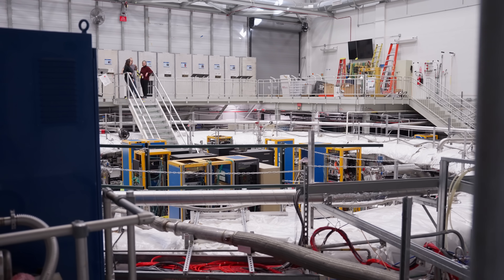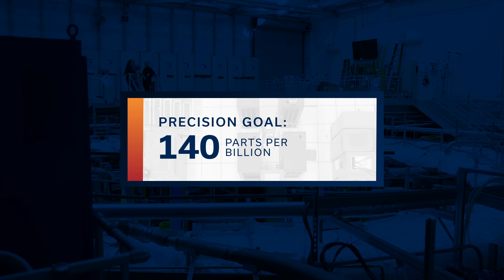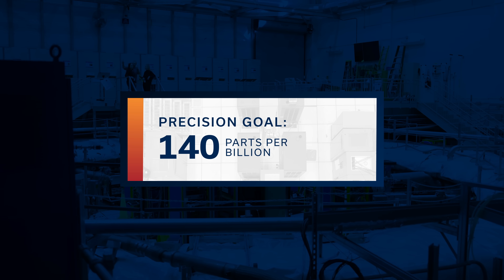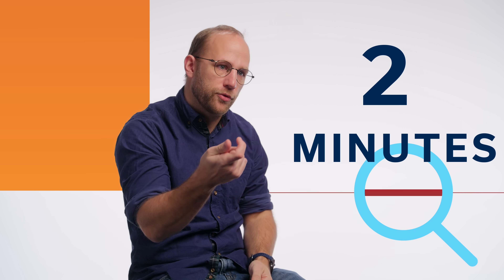We are including RUN 4, RUN 5, and RUN 6 data taken in the past few years. The final publication will be the most precise measurement of the anomalous magnetic moment of the muon, aiming to reach 140 parts per billion sensitivity. To put that in perspective: I'm 36 years old, and it would be like measuring my entire life so far to a precision of two minutes — which feels quite impressive.